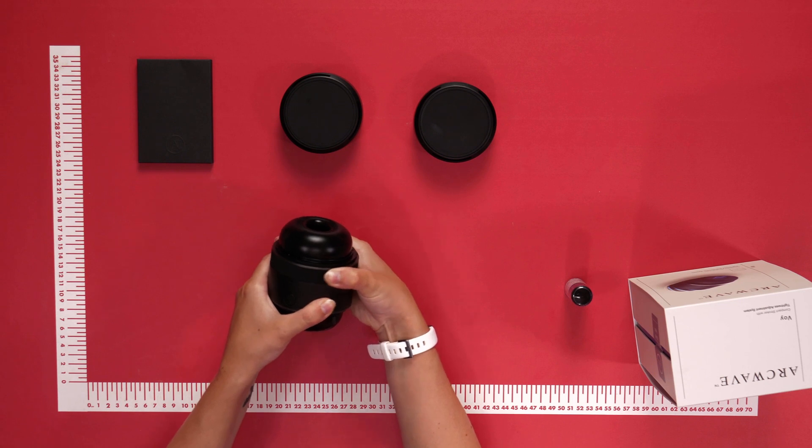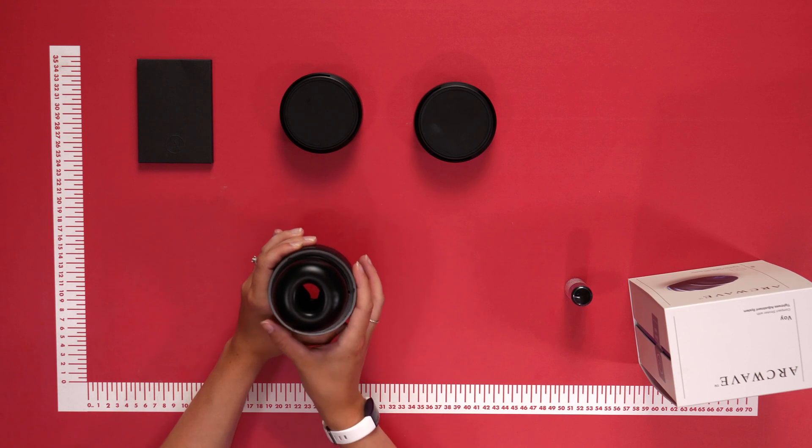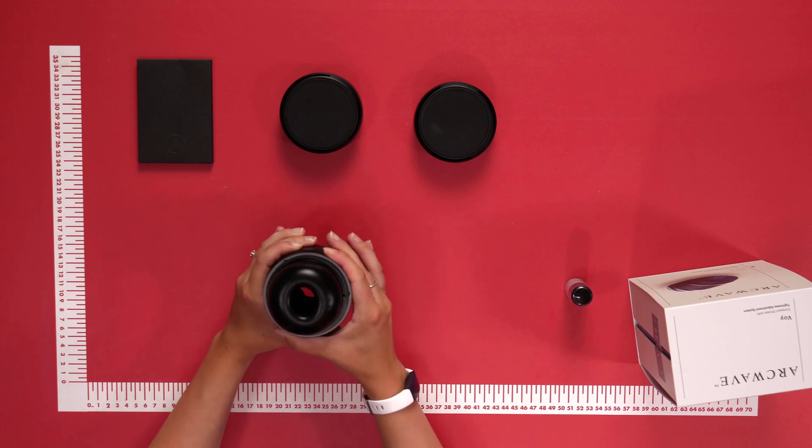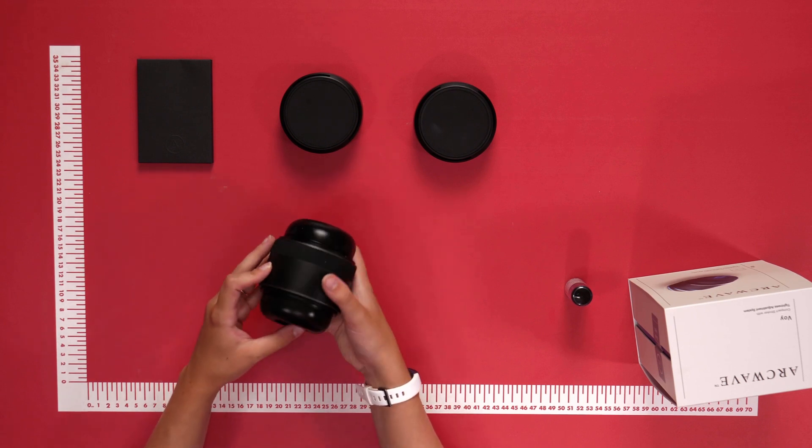To tighten, twist to the right. As you can see, it gets tighter on the inside. To adjust the tightness, twist back to the left and decide which is best for you.